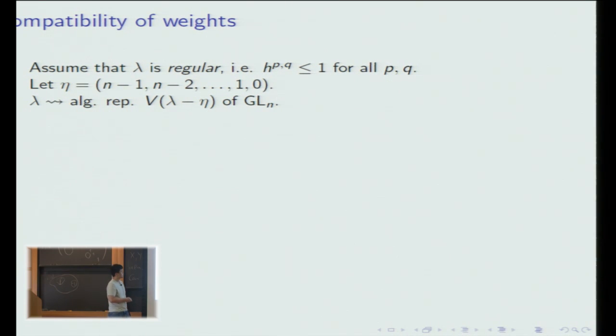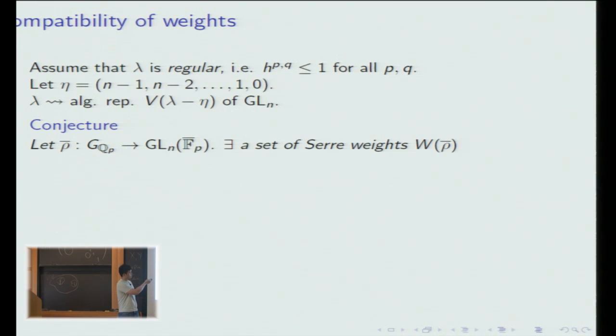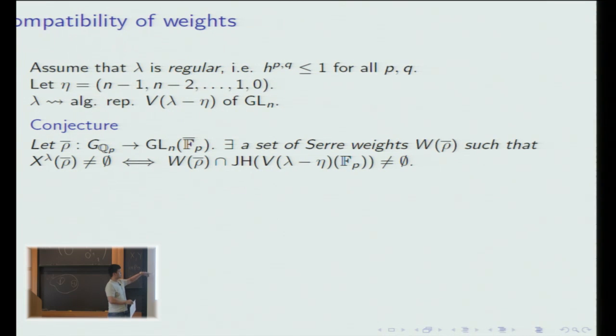The conjecture is that if we start with a mod p Galois representation, there's some set of Serre weights which I'll call W(ρ̄) such that this deformation space is nonempty if and only if the following intersection of sets is nonempty. This is some compatibility between notions of weights by reduction. Let me point out that in characteristic zero we just had one irreducible representation V_{λ-η}, and in characteristic p we'll often have a set of irreducible representations. This gives a simple criterion for when the deformation space is nonempty.